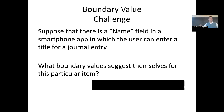Suppose in a smartphone app a user can enter a title for a journal entry. What are some equivalence classes you'd want to check? An empty field would be a good one. Something that pushes the character limit would be another good one. Special characters in different languages are worth checking too, as well as backslashes or SQL injection patterns such as dash-dash comment characters followed by SQL code to mask or replace database content.